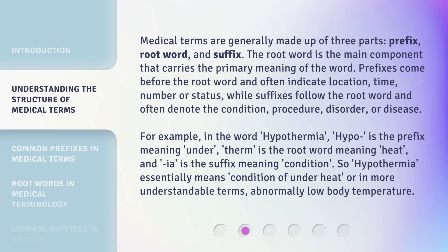Medical terms are generally made up of three parts: prefix, root word, and suffix. The root word is the main component that carries the primary meaning of the word. Prefixes come before the root word and often indicate location, time, number, or status, while suffixes follow the root word and often denote the condition, procedure, disorder, or disease.